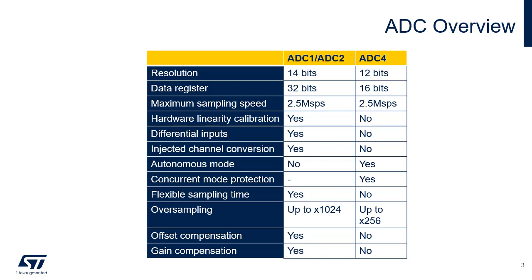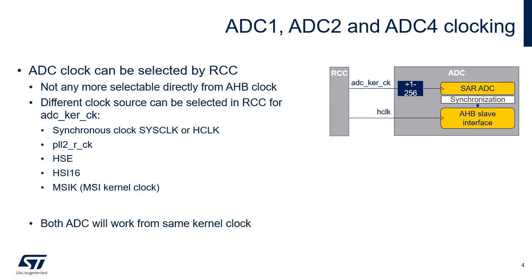Raw samples acquired by ADC1-ADC2 may be processed by the oversampler, gain and offset compensation units, before being provided to the software. The maximum oversampling ratio is 1024. Both ADCs feature a dual-clock domain architecture, meaning the ADC kernel clock is independent from the AHB bus clock used to access ADC registers. ADC1-ADC2 and ADC4 use the same kernel clock source from RCC.